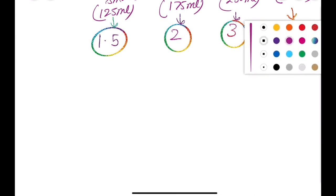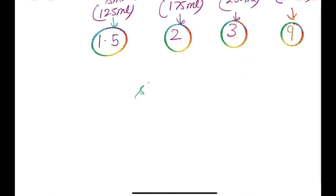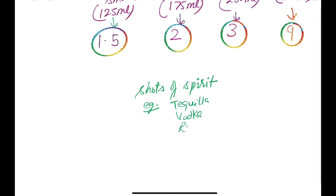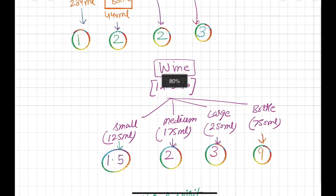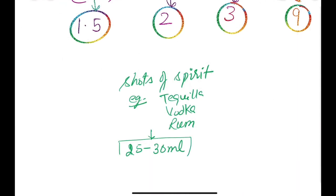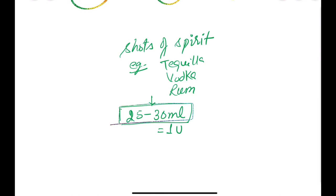Next, we will talk about shots of spirit — like tequila, vodka, rum, etc. For a standard glass, just remember one thing: around 25 to 30 ml of alcohol is used, and then soda or water is added. The alcohol quantity is essentially very small — 25 to 30 ml — and this makes it 1 unit.